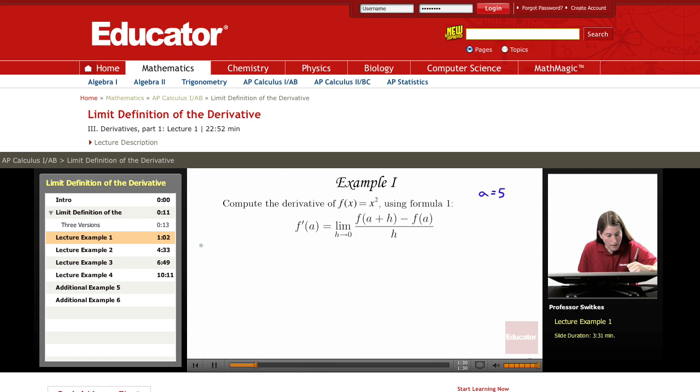So f prime of 5 will equal the limit as h approaches 0 of the fraction. Now in the numerator of the fraction we need f of a plus h. a is 5 so we're looking at f of 5 plus h. f of x is x squared and so f of 5 plus h is 5 plus h quantity squared. So I'll put 5 plus h quantity squared in place of f of a plus h.